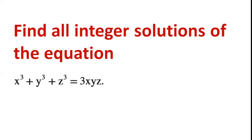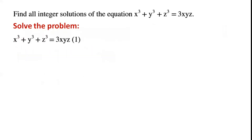Find all integer solutions of this equation. By rearranging the equation, we have x cubed plus y cubed plus z cubed minus 3xyz equals 0.